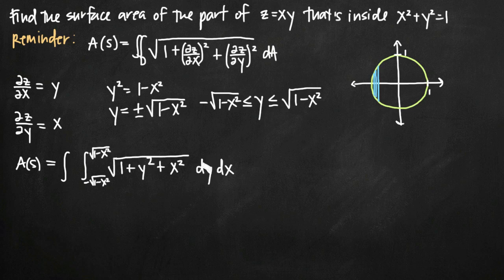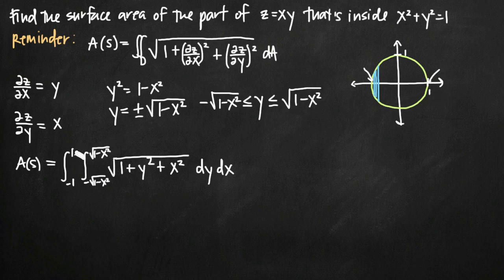Since we're integrating with respect to x second and dx is on the outside, our limits for x can just be constants. From the circle, the leftmost value x can attain is x equals negative 1, and the rightmost is x equals 1. So negative 1 to positive 1 are our limits of integration for x. Now we have our integral fully set up and just need to solve it.